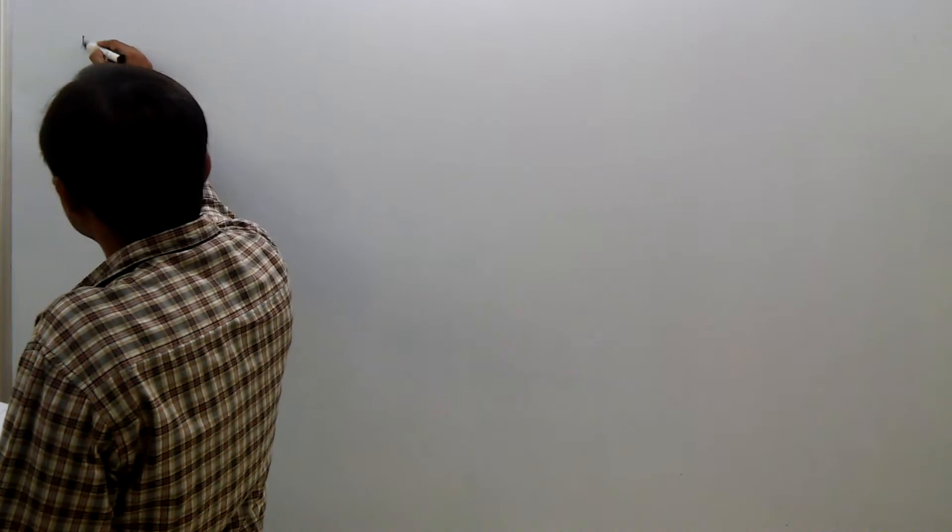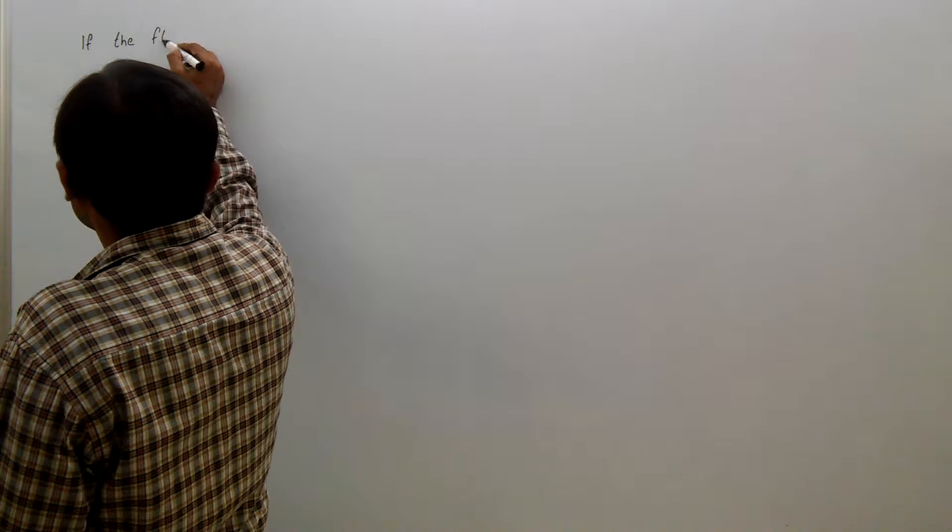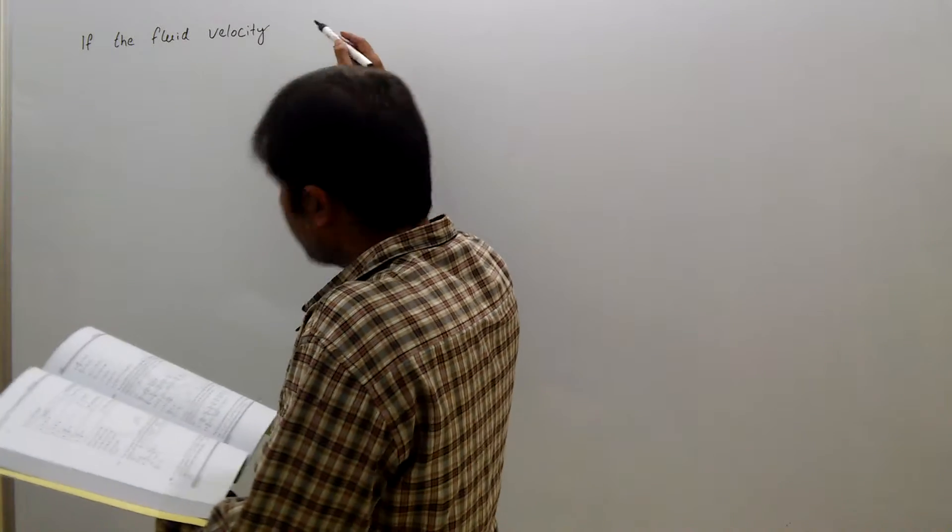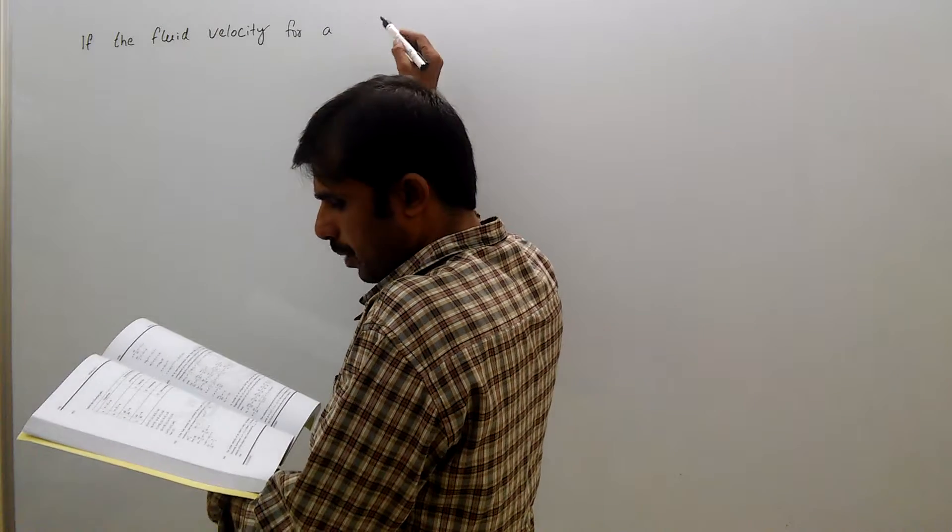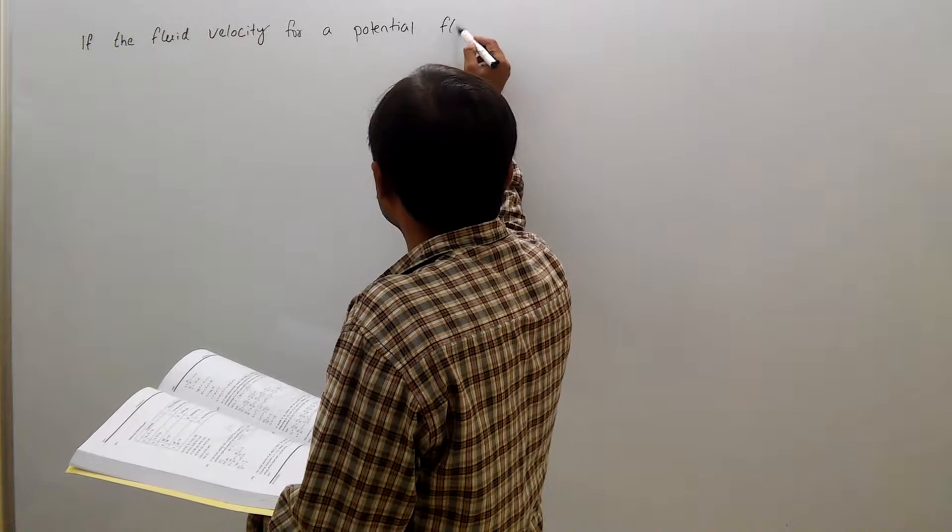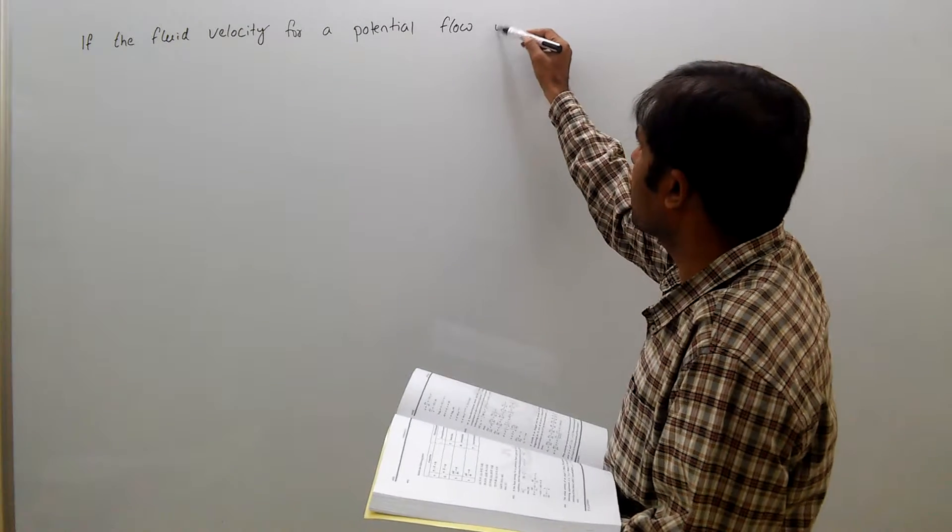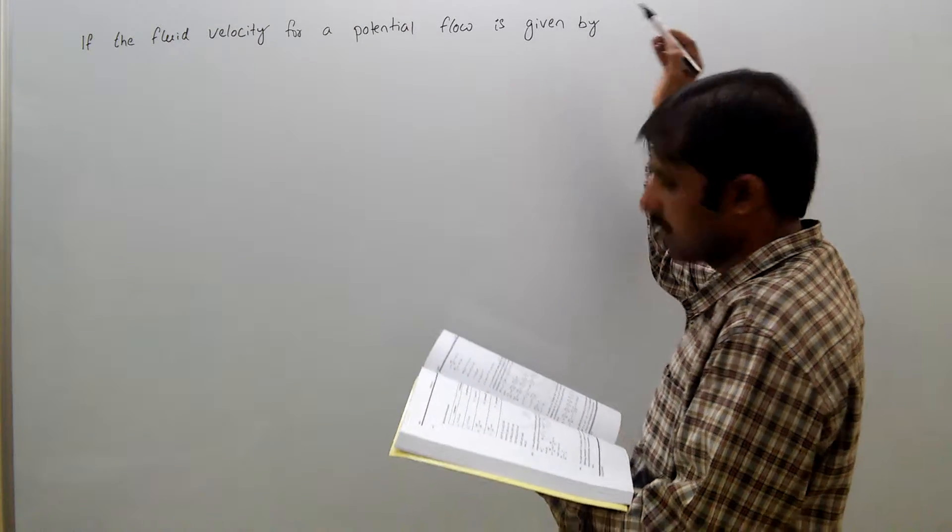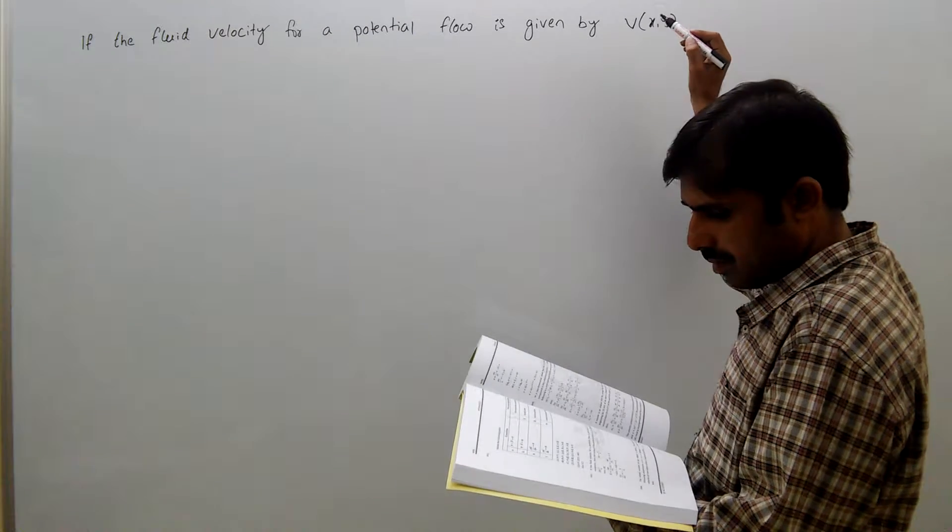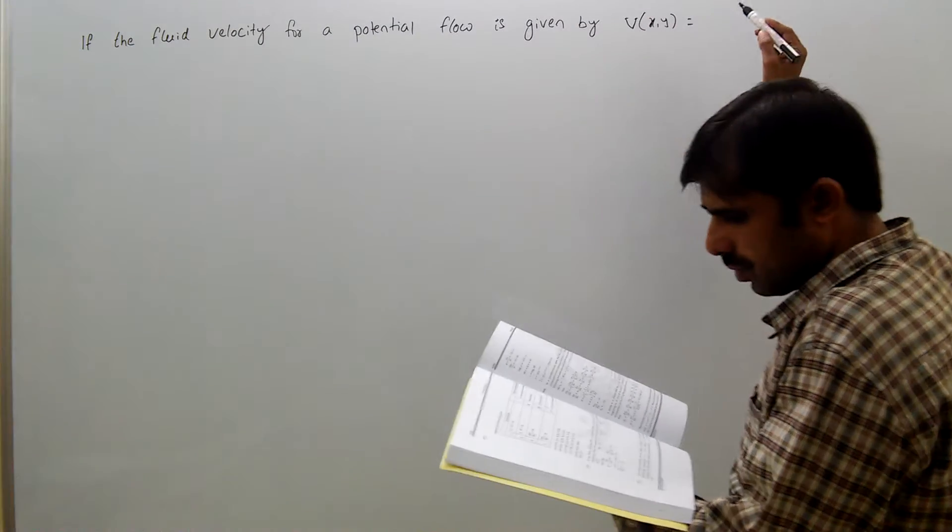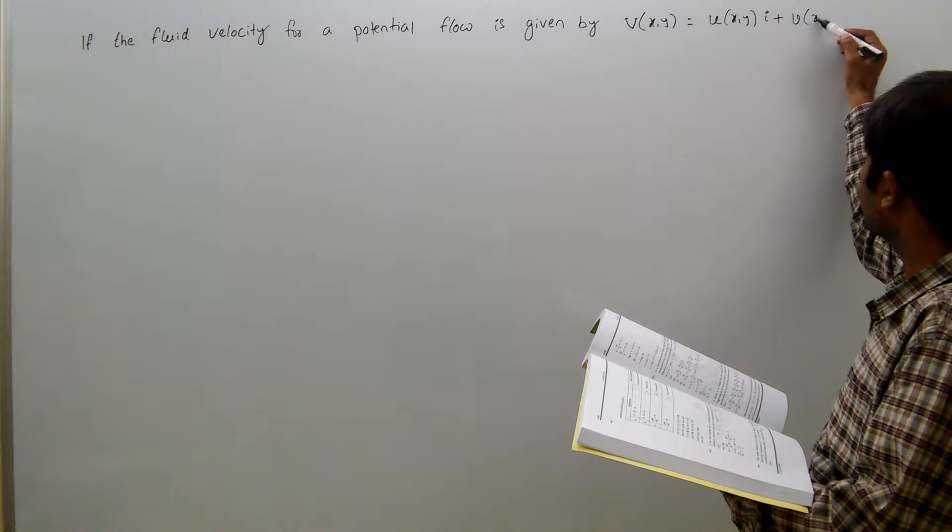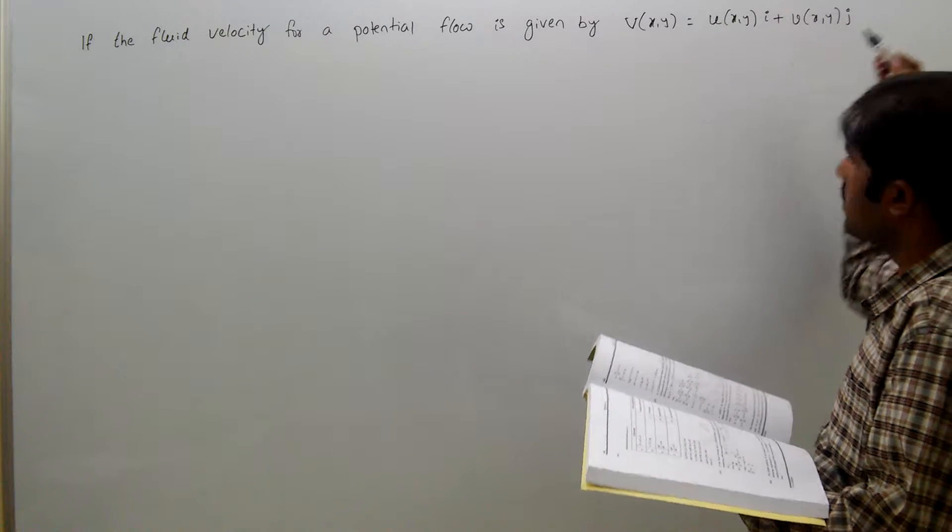If the fluid velocity for a potential flow is given by v(xy) = u(xy)i + v(xy)j